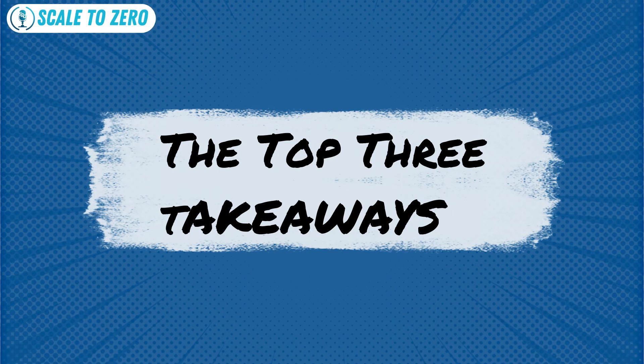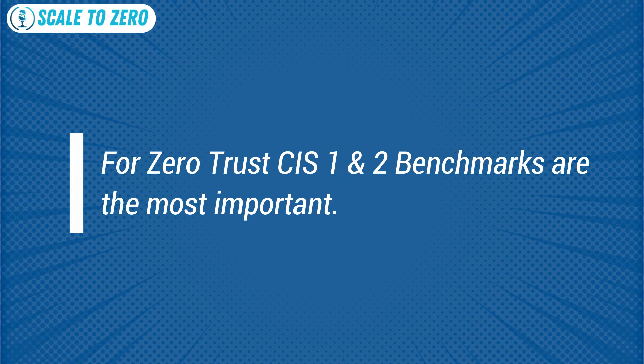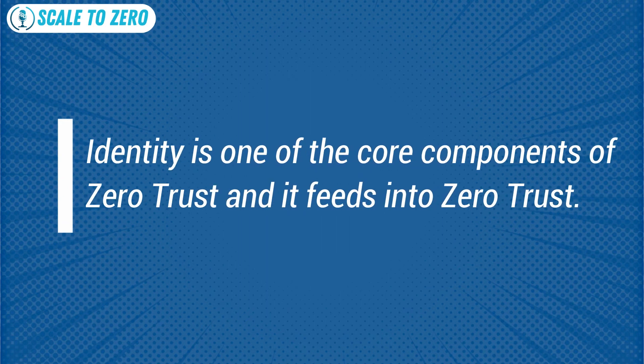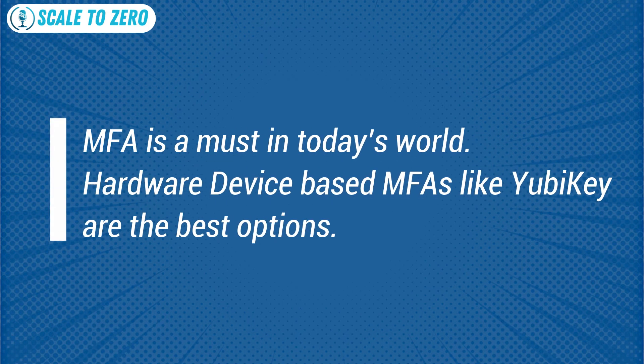Here are the top three things I learned today. First, for zero trust, CIS benchmarks one and two are the most important — draw and understand your current inventory and architecture. Second, identity is one of the core components of zero trust and it feeds into zero trust policies, so define and enforce those policies throughout your infrastructure. Third, MFA is a must in today's world, and hardware devices like YubiKey are the best options.